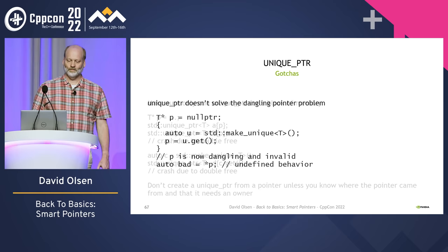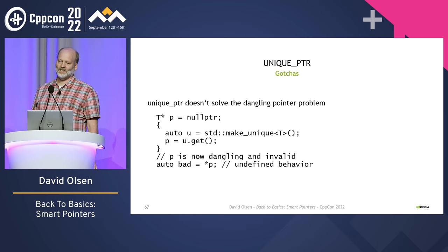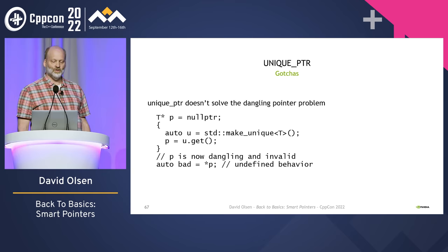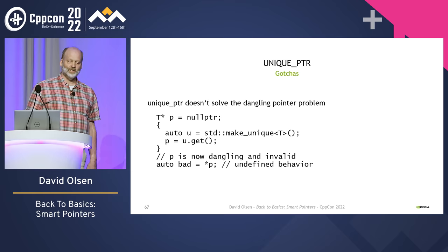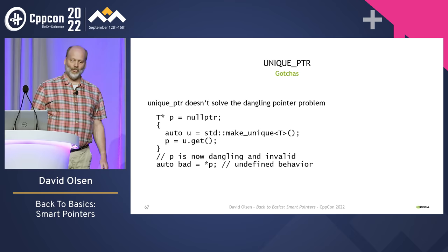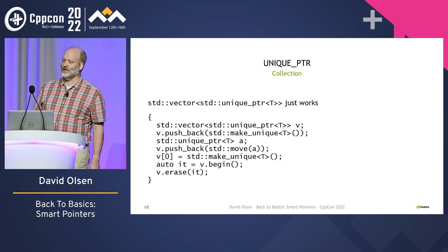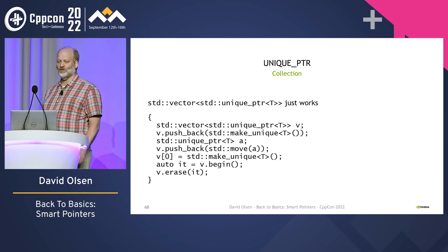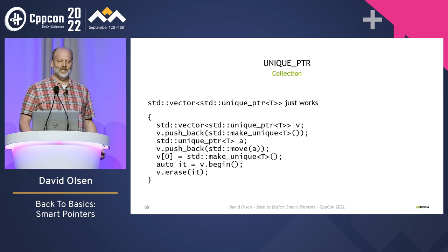As a general rule, don't create a unique_ptr from a raw pointer unless you know where that pointer came from and are certain that it needs to have an owner. The second gotcha is the dangling pointer problem — when a pointer is deleted, any other pointer that was pointing to the same memory becomes invalid. That can happen with unique_ptr just as easily as with raw pointers. It is up to the programmer to make sure that any raw pointers created by calling unique_ptr::get are no longer in use after the unique_ptr goes out of scope. One last comment: standard containers of unique_ptrs just work — if you need to keep track of a large number of unique_ptrs, the easiest way is with a vector of unique_ptr.